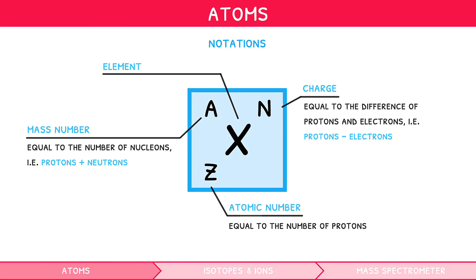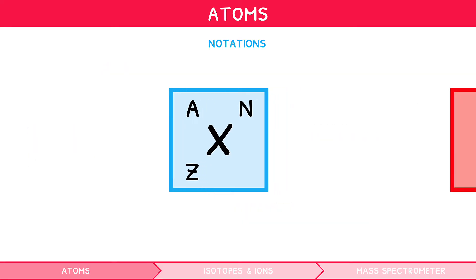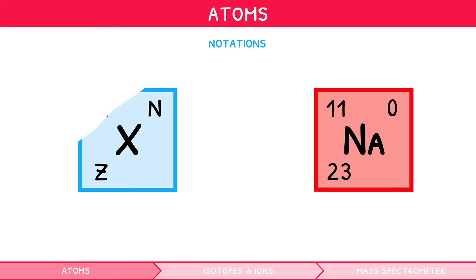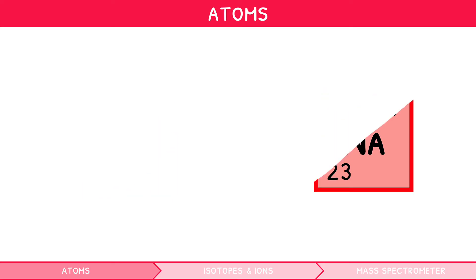So, if we were to use the example of sodium, we would say that Na has a mass number of 23, a proton number of 11, and, given it is a neutral atom, a charge of 0. Atoms can take on different forms, called isotopes and ions.